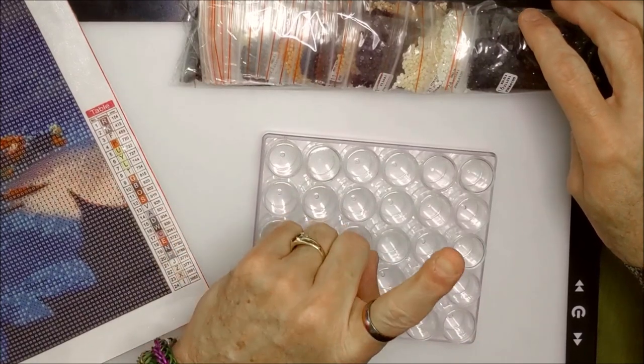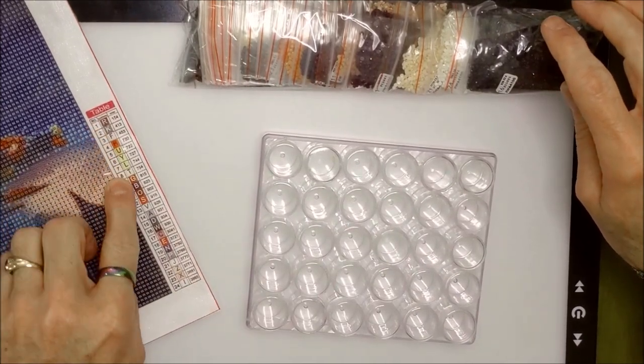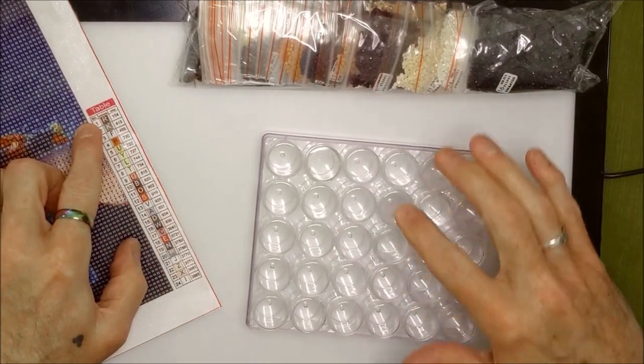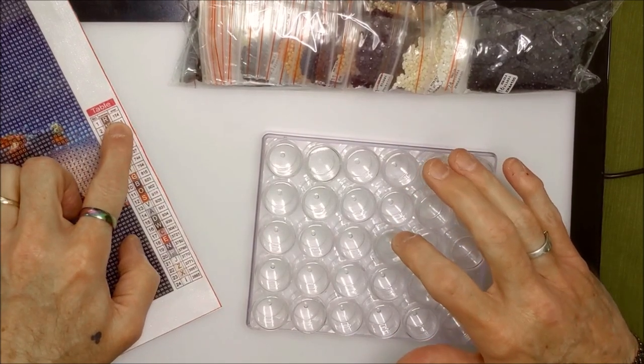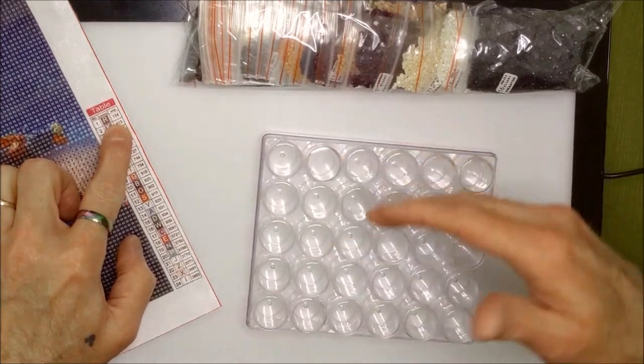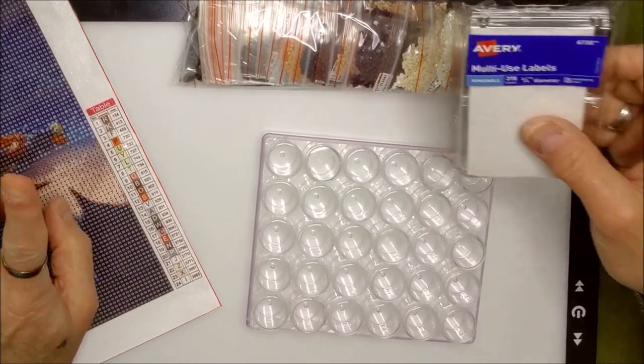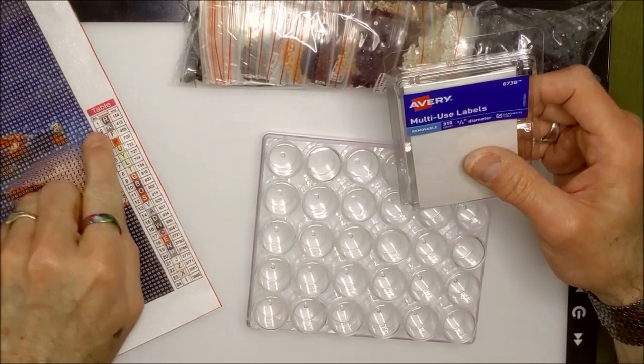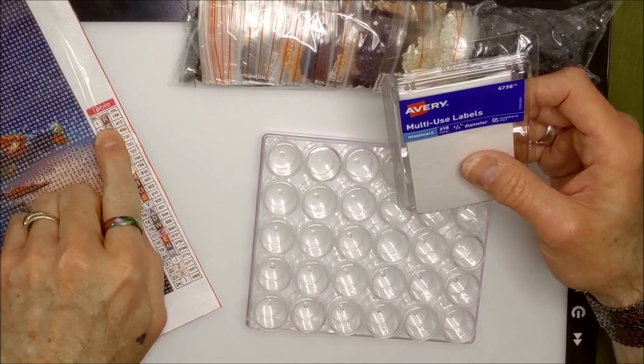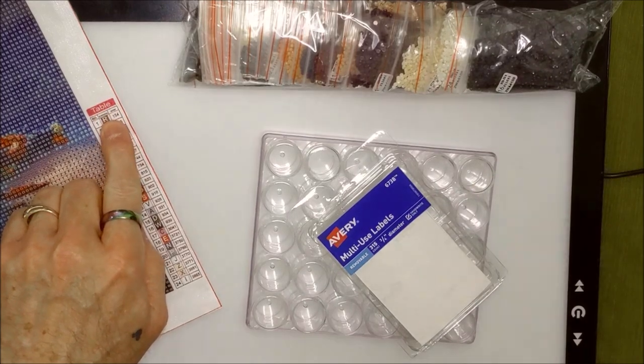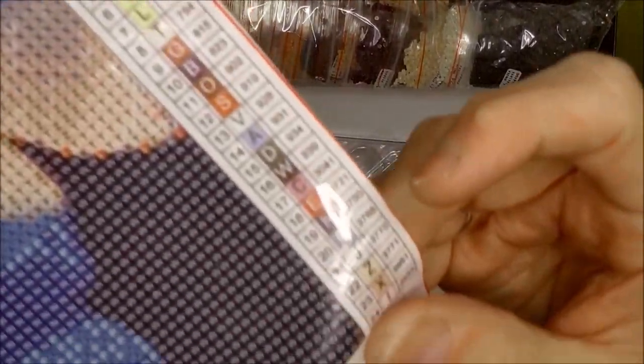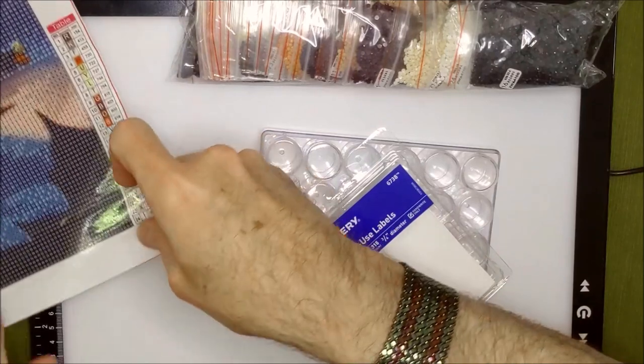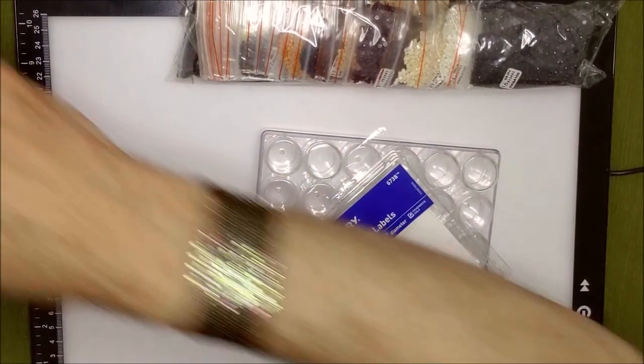Let's get into how we organize these. First things first, I can go down this table. I can either label these with a number one or the number of the DMC floss number. Some people label all three symbols on their tags, I don't. I label the number and the symbol. I do the number and the symbol.